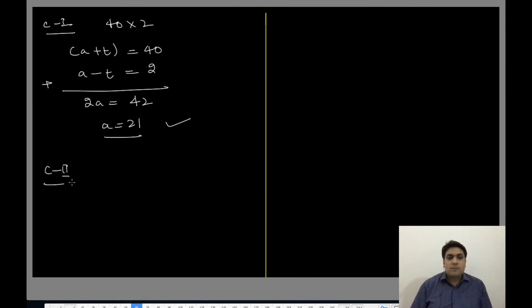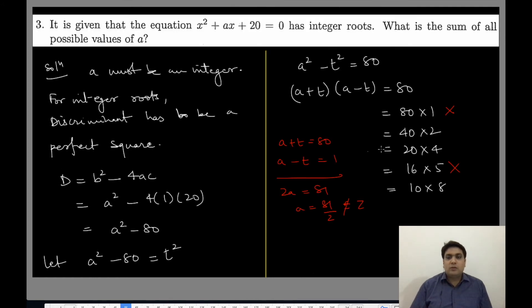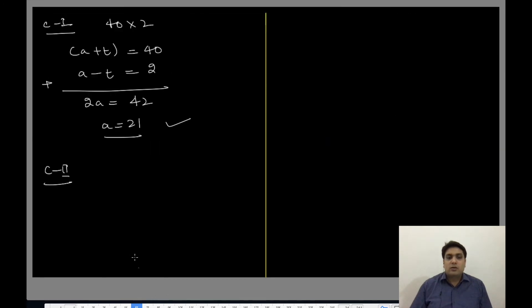Case 2, 20×4: a + t equals 20, a - t equals 4. Again we have 2a equals 24, a equals 12, which is an integer.